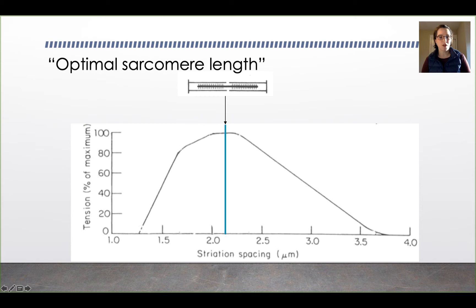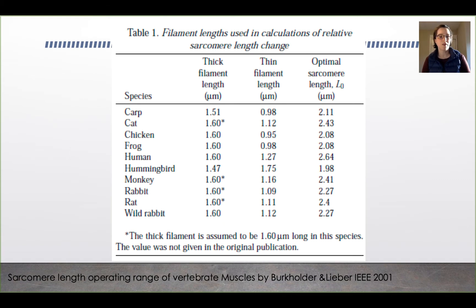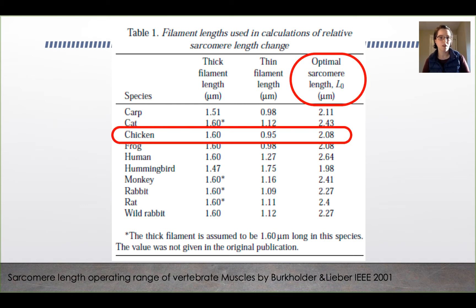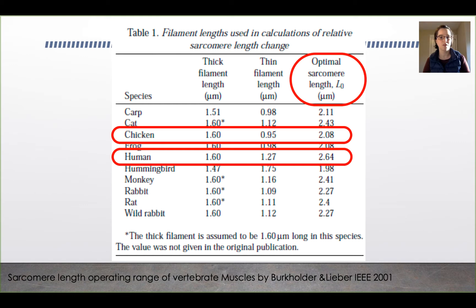The region of optimal sarcomere length varies depending on the type of animal. Here's a table of different species. Note the similar thick filament lengths for most species — about 1.6 microns. But the thin filament length varies, and as a result the optimal sarcomere length also varies. For example, a chicken has an optimal sarcomere length of 2.08 microns, while a human has an optimal sarcomere length of 2.64 microns — the longest on this table. Hummingbirds have the shortest optimal sarcomere length.